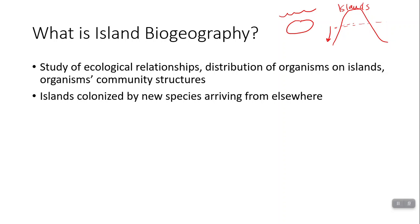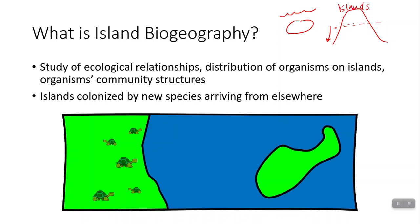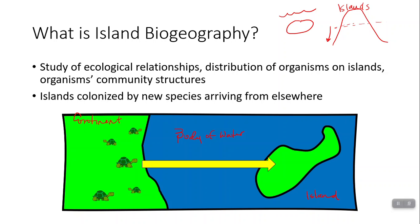Islands tend to be colonized by species arriving from somewhere else. So if there's a newly formed island out there, how are living things going to get to it? Here we have a continent, a body of water, and an island. Let's say we have a population of turtles on the continent — well, how could they get out to that island? They could swim. And if they swim out there, they could actually start to establish a population of turtles on that island.